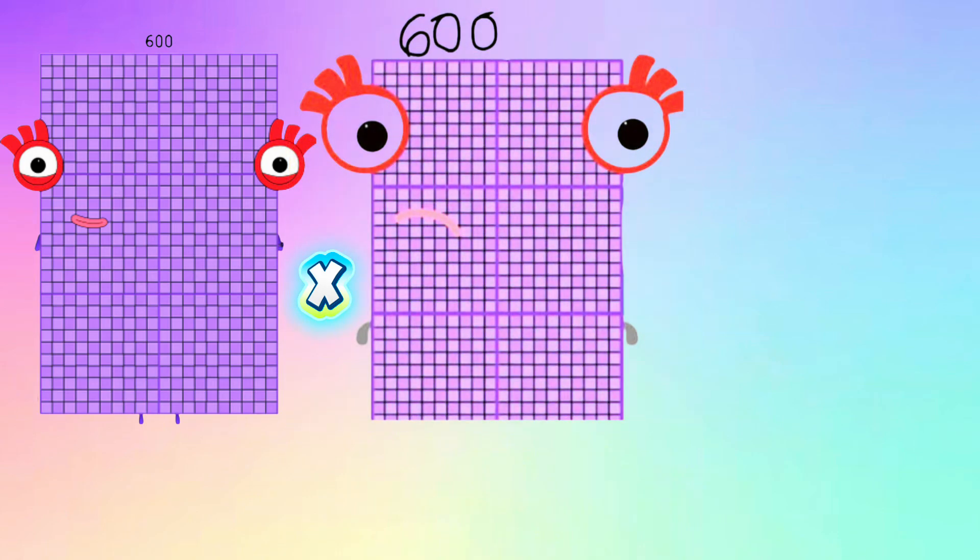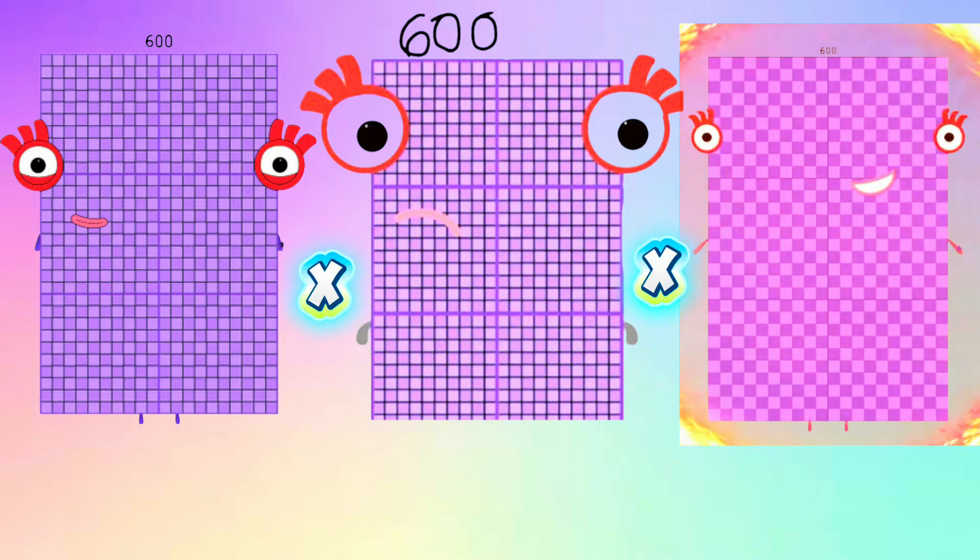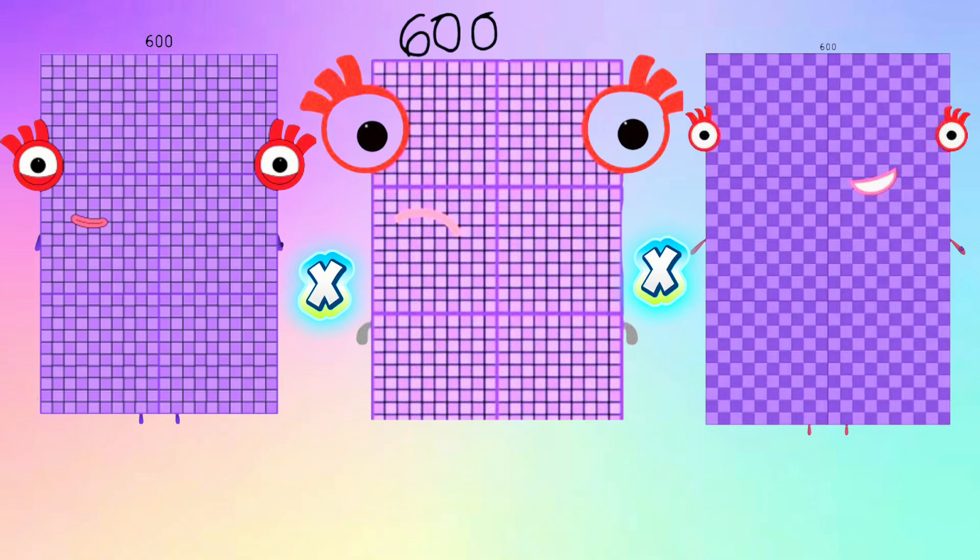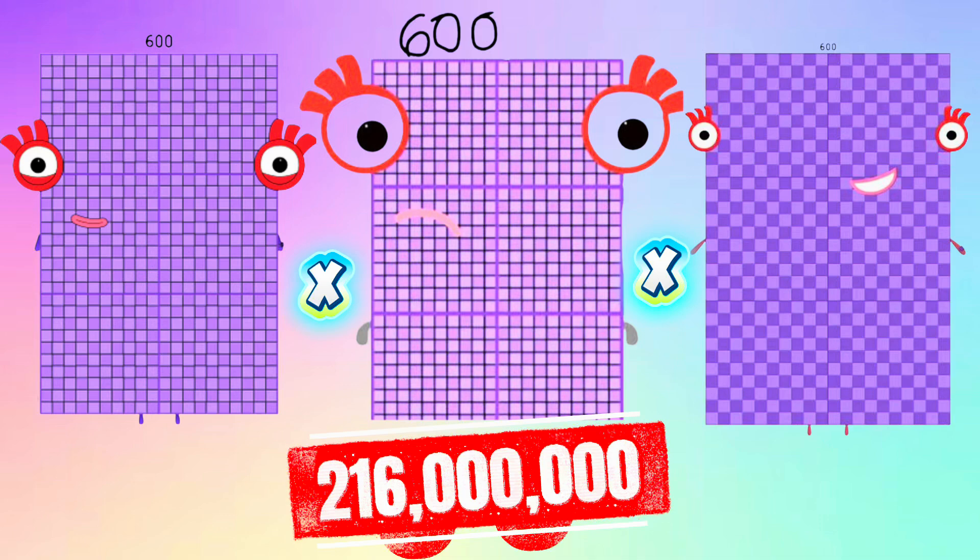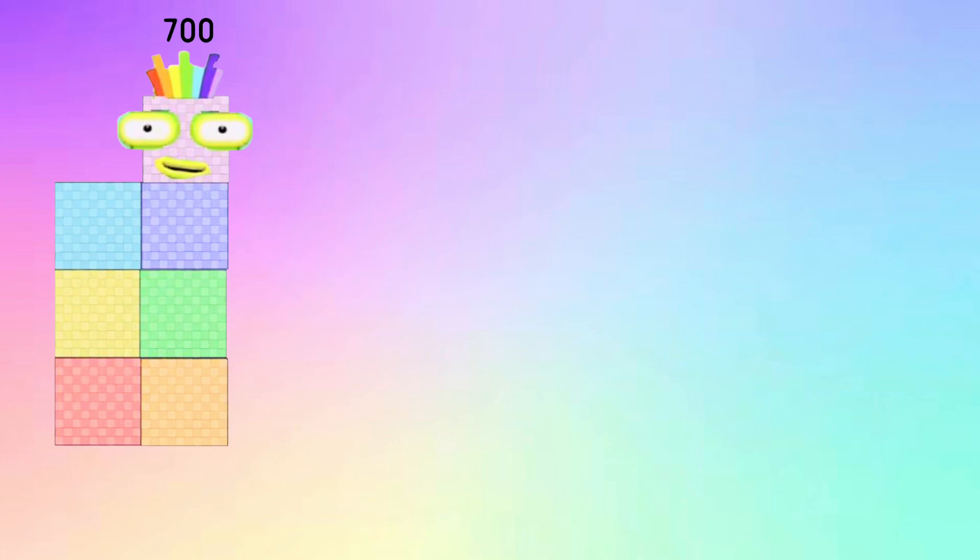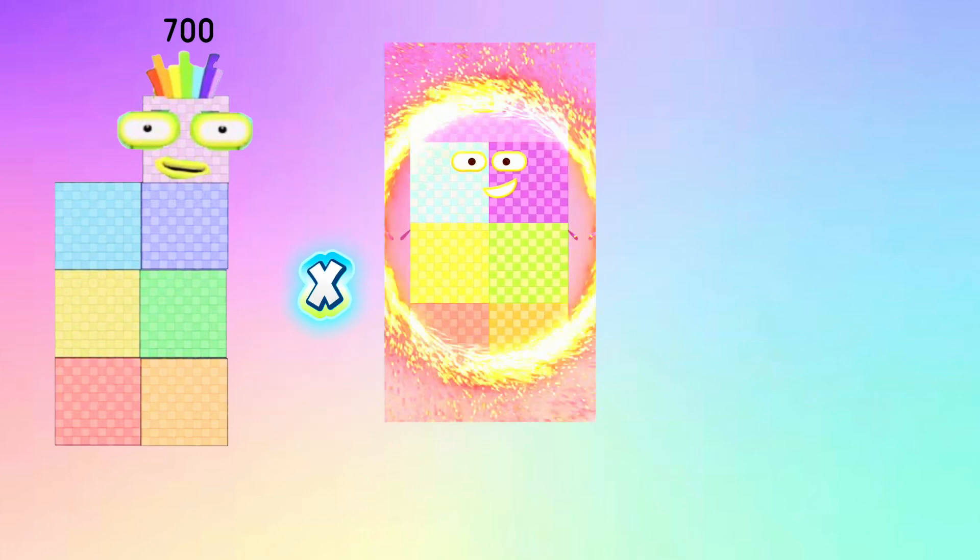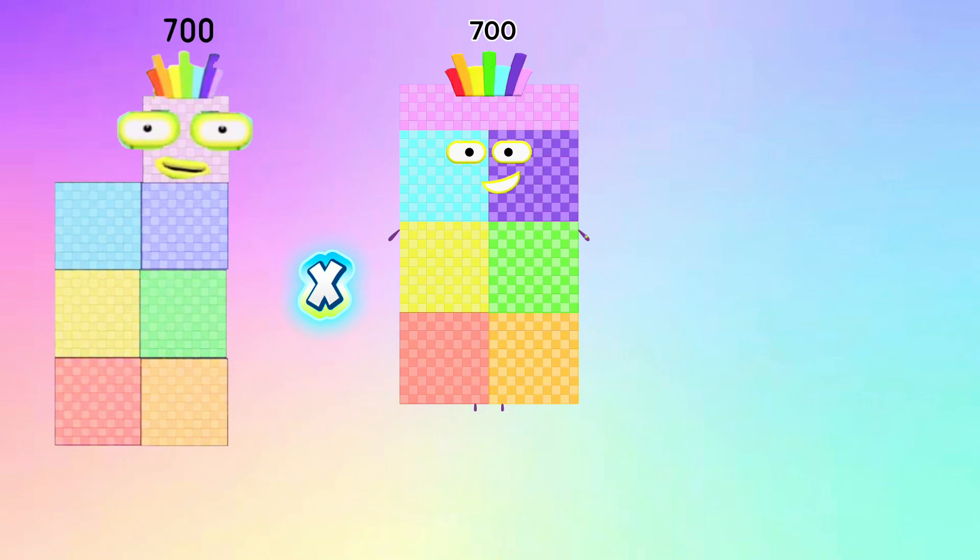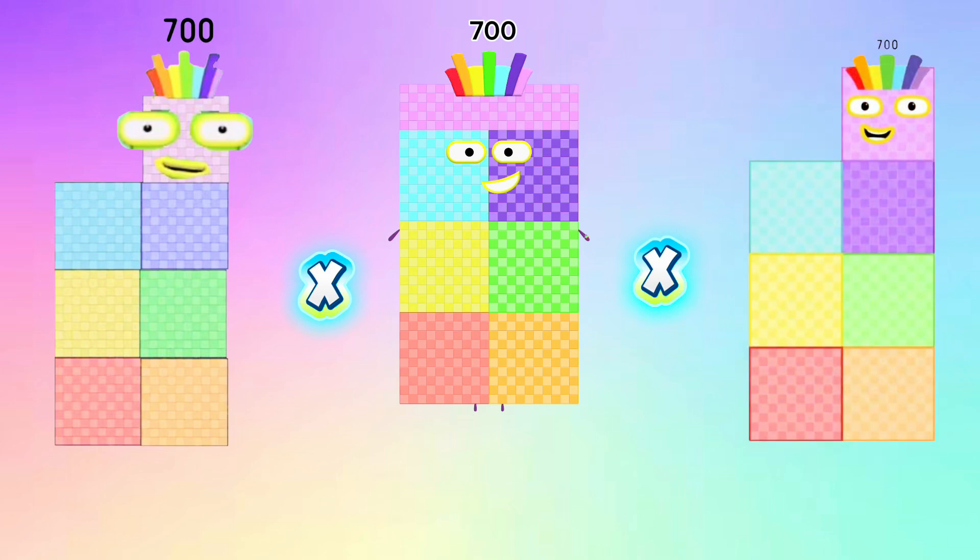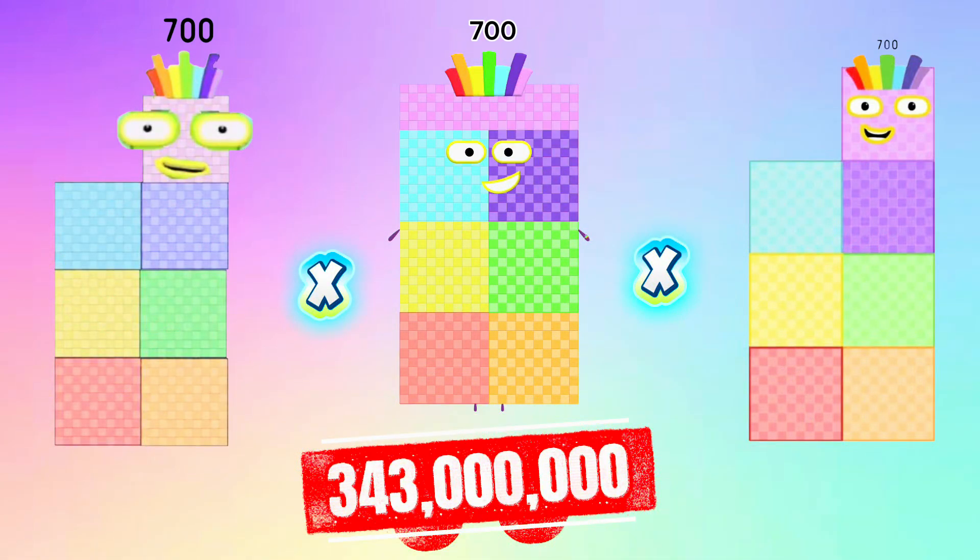600 times 600 times 600 is equals to 216 million. 700 times 700 times 700 is equals to 343 million.